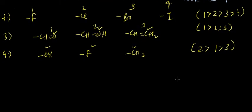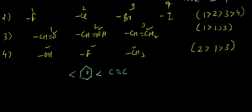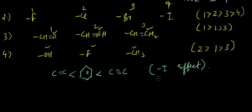Before moving to the next example, please remember this experimentally proven fact: the electronegativity of benzene is less than alkyne, and the electronegativity of benzene is greater than alkene. This is the order of minus-I effect as well, since minus-I effect is directly proportional to electronegativity.